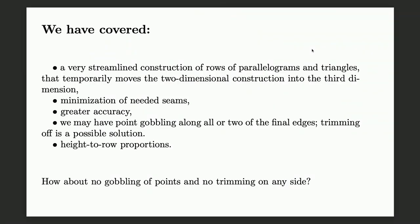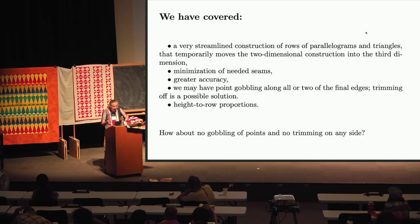So what have we covered so far? A very streamlined construction of rows of parallelograms and triangles. We temporarily move into the third dimension to be more efficient, to mix colors better, and to enable minimization of needed seams. This also gives greater — or at least more consistent — accuracy and allows different design options. One issue is point-gobbling along some final edges; trimming is a possible solution. I also talked about continued fractions and height-to-width proportions, which matter when you need to add borders to make a quilt fit a bed.